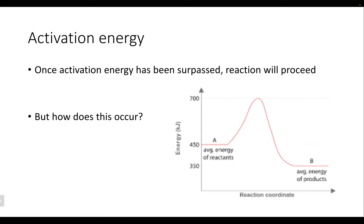The activation energy is essentially an energy barrier we need to overcome in order for the reaction to start. We want to think about how this occurs — the reactants have some amount of potential energy, and we need to get them over that hump for the reaction to start. Adding heat and increasing the temperature — giving that extra boost of energy — is typically the most efficient way for this to occur. Thinking back to the thermite video, that's why they added the sparkler in the flower pot: they needed to provide that extra heat in order for the activation energy to be surpassed.